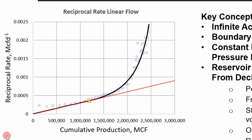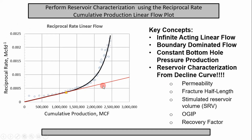So if you recall previously, we put our production data on a reciprocal rate cumulative production plot as shown here for linear flow. Linear flow is for hydraulically fractured wells. So after we plotted this data, we put our best fit line — a straight line — which shows us the transient region or the linear flow region, and then beyond that we fit it with ARPS. The important concept is this straight linear line that we fit to our early time data. This is important for characterizing the reservoir.